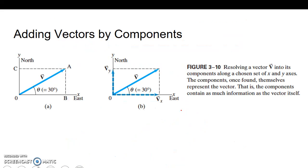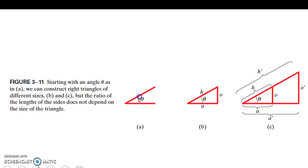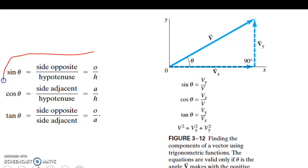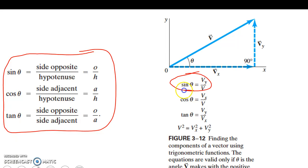Now let's look at components of a vector — this is your trig again. If we have a displacement vector of 30 degrees north of east, we can resolve it into its x and y components using trigonometry. We construct right triangles and use sine, cosine, and tangent — SOH CAH TOA. We can also use the Pythagorean theorem. So we can use any of the trig functions and the Pythagorean theorem to solve for vectors algebraically.